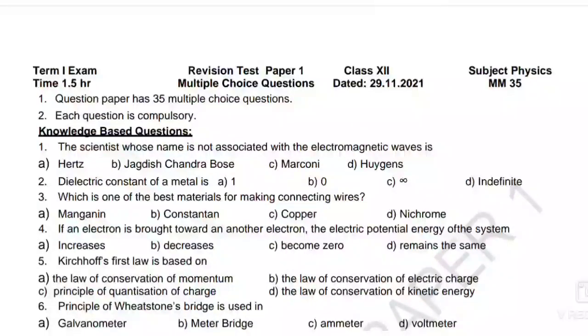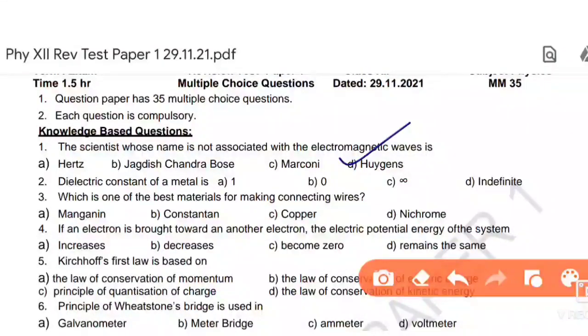The first question is: the scientist whose name is not associated with electromagnetic waves. Four scientists remember the electromagnetic waves which are used: Number 1 is Maxwell, which has Maxwell equations, then Hertz, then Bose, then Marconi. These four scientists remember the electromagnetic waves. According to Huygens, which has worked in optics. So the answer is D option.